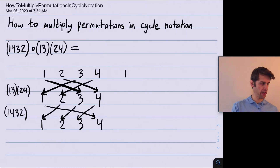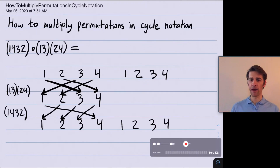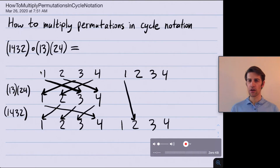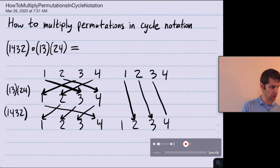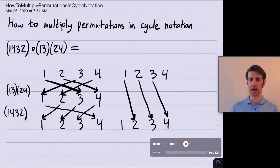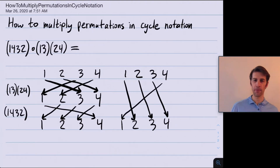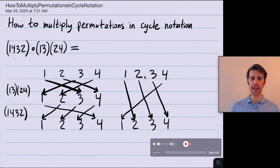So what should we get on the right-hand side? Well, 1 is being mapped to 3, which is then mapped to 2 — so overall 1 maps to 2. 2 is mapping to 4, which then goes to 3 — so overall 2 goes to 3. 3 is mapping to 1, which then goes to 4 — so overall 3 goes to 4. And 4 is going to 2 and then to 1 — so overall 4 goes to 1. So from this picture we can already guess the answer in cycle notation.